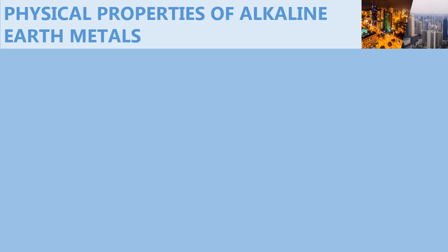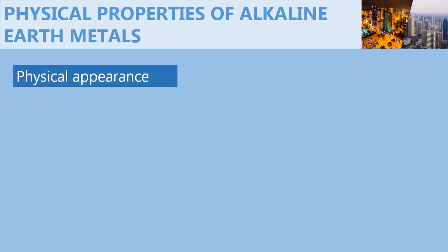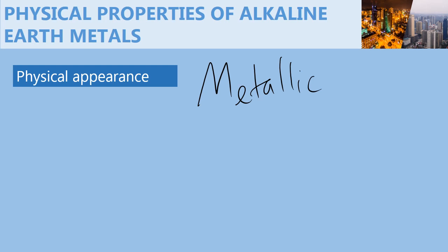Physical properties of alkaline earth metals. When alkaline earth metals are polished, they acquire a metallic lustre and become shiny. However, with time they lose the metallic lustre because of exposure to air, which contains oxygen.